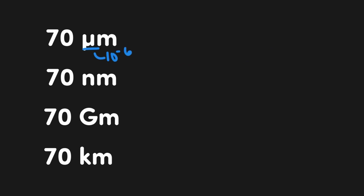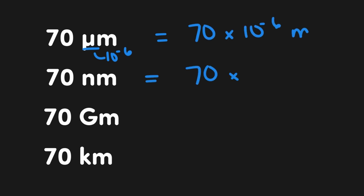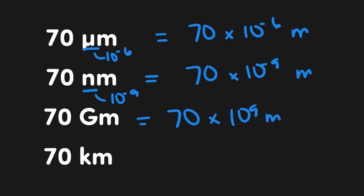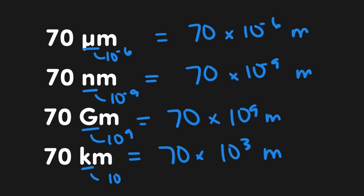Since all of these symbols just stand in for the math, we can quickly convert various values of different scale without having to use a conversion factor by replacing the SI letter with the math it stands for. For example, 70 micrometers would be 70 times 10 to the negative 6 meters; 70 nanometers would be 70 times 10 to the negative 9 meters; 70 gigameters would be 70 times 10 to the 9; and 70 kilometers would be 70 times 10 to the 3 meters.